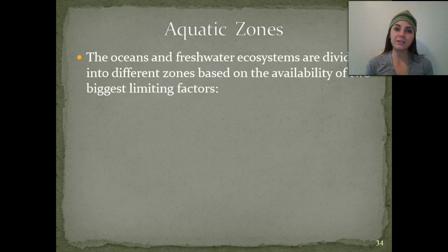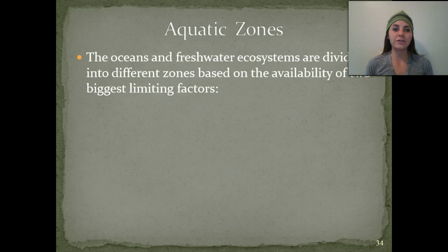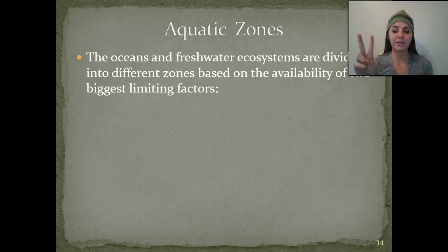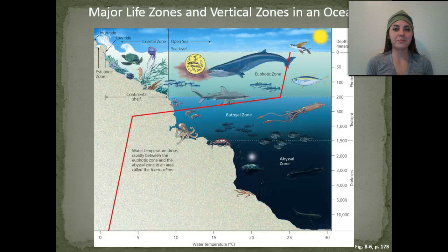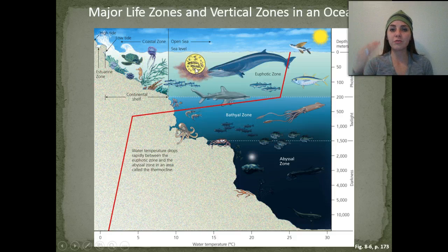So aquatic zones — we discussed those whenever we talked about freshwater. Just like freshwater, oceans too have different zones that are subdivided based on the availability of the two largest limiting factors: sunlight and nutrients. This diagram gives us insight into the major life zones as well as the vertical zones in an ocean.